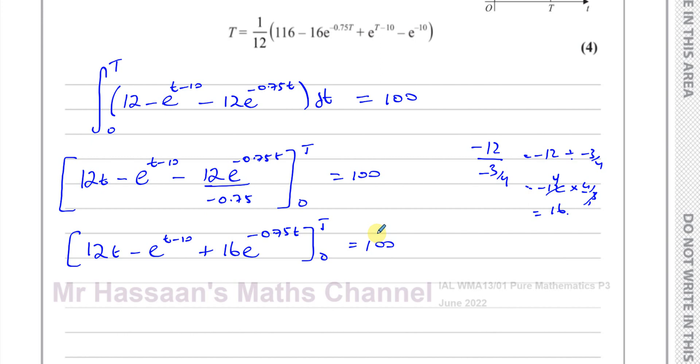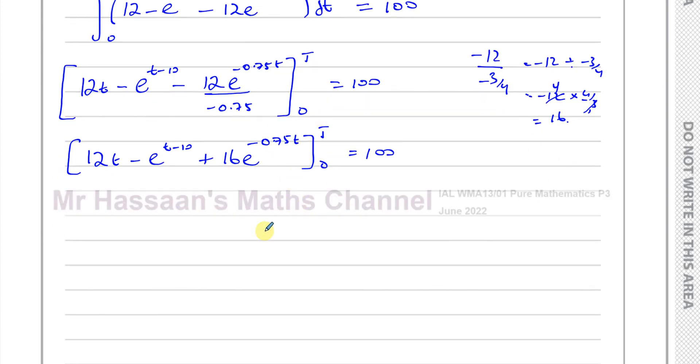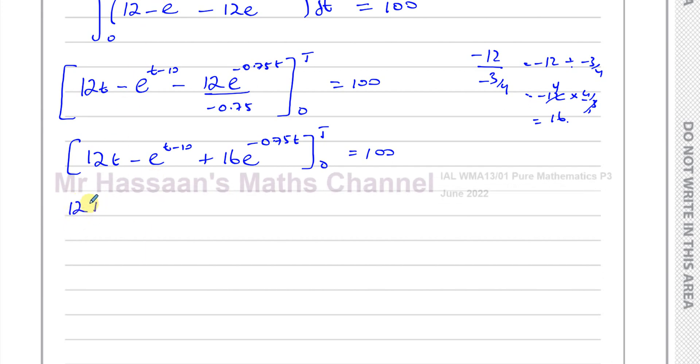Between the limits of 0 and T equals 100. Now I can start substituting the values of T and 0 into this and set up my equation. This is going to be 12 times capital T minus e to the power of capital T minus 10 plus 16e to the power of negative 0.75 capital T.